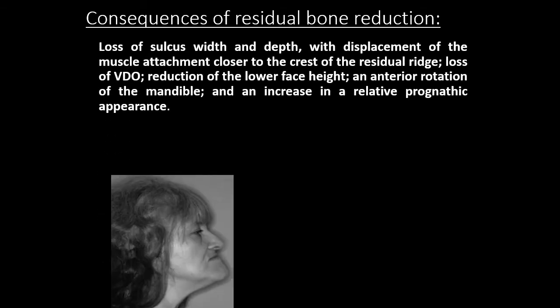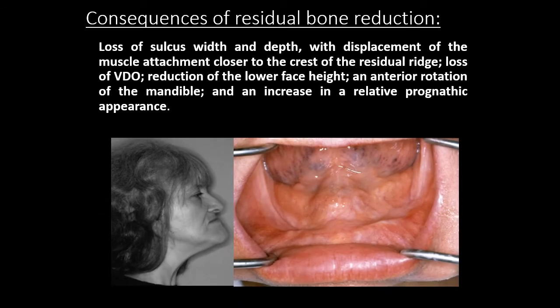The consequences of residual bone reduction include loss of the depth and width of the sulcus with displacement of muscle attachment closer to the crest of the residual ridge, loss of vertical dimension, reduction of lower face height, anterior rotation of the mandible, and an increase in relative prognathic appearance.